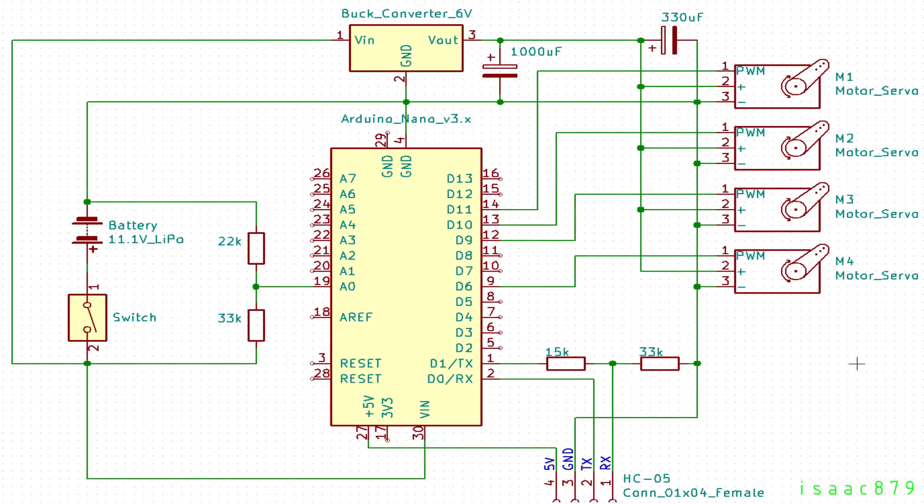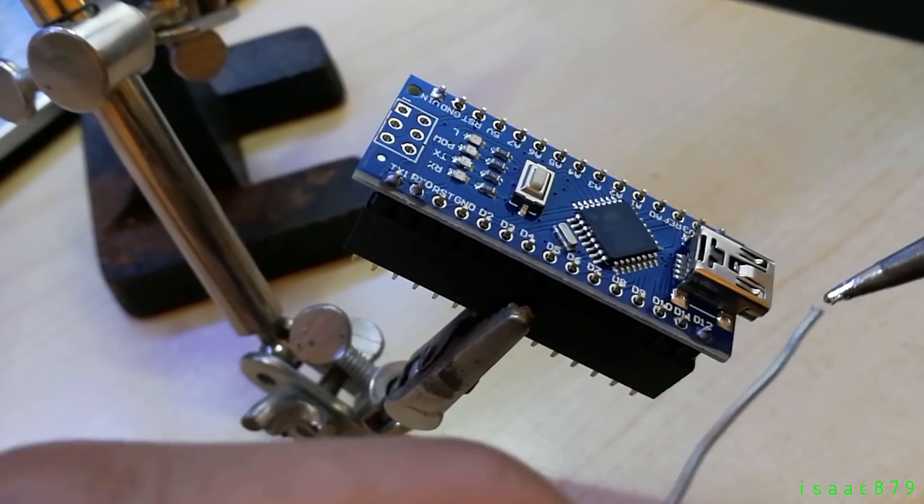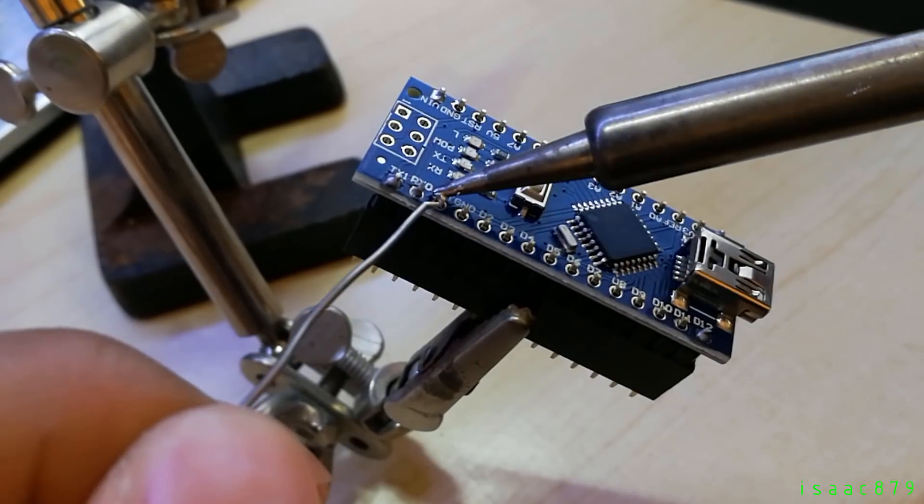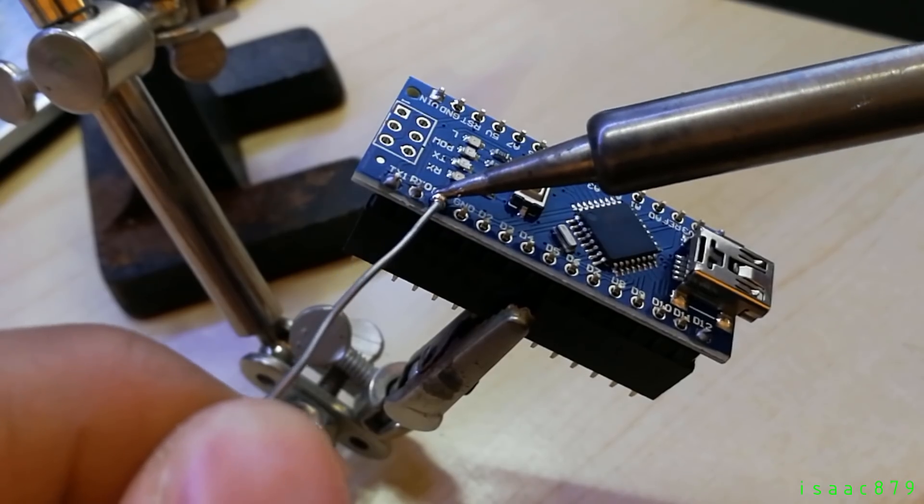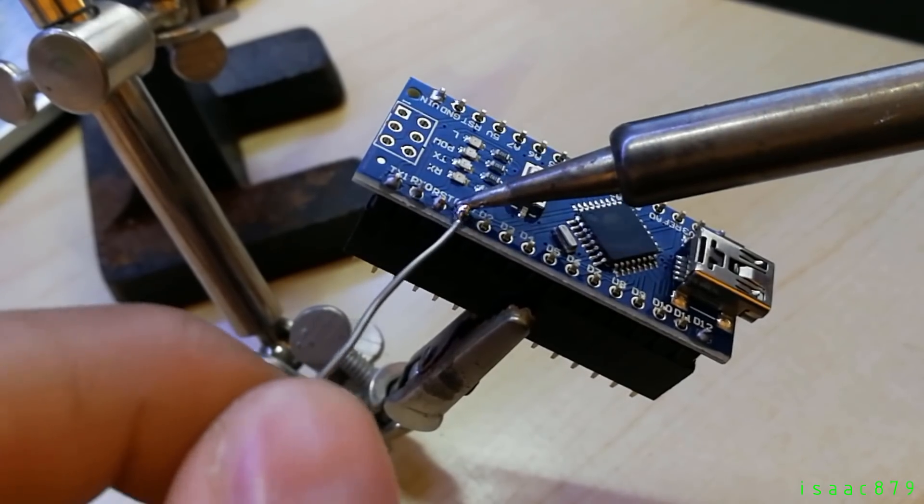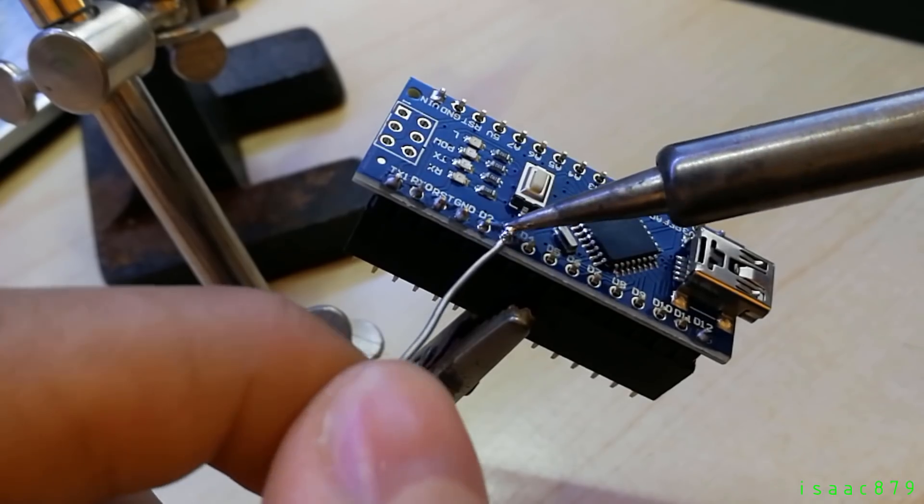I drew the circuit schematic in KiCad. It's fairly simple and revolves around an Arduino Nano. There is a battery for the power and a switch. A potential divider was needed to step the battery voltage down to a safe level for the Arduino analog pin to read and determine the remaining battery level.